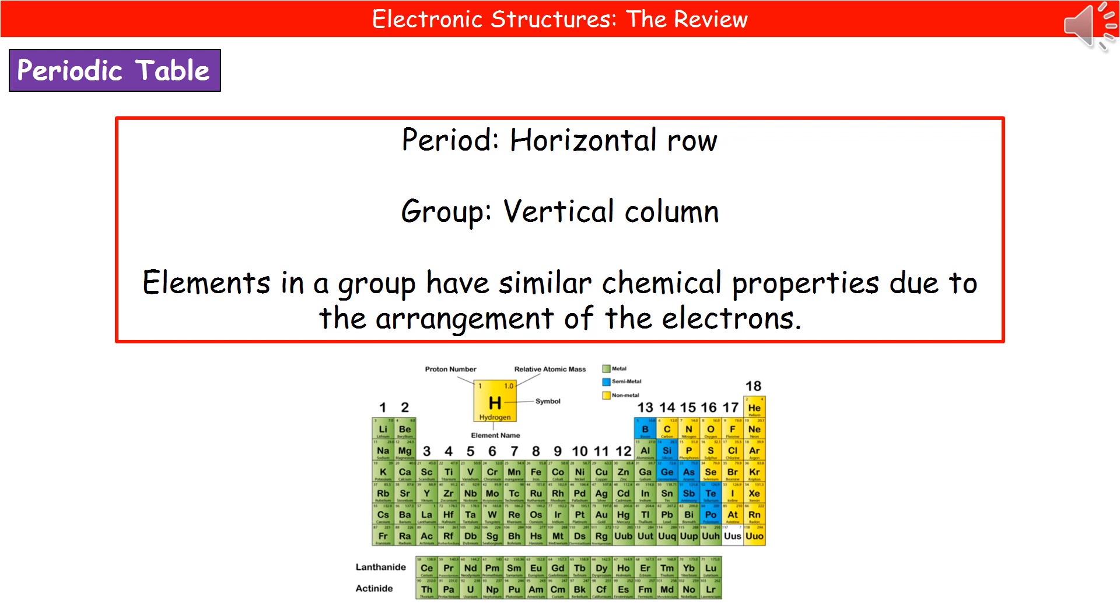Second one is the groups. Those are the vertical columns and you will have two possible numbers associated with them. So you might have learnt it as groups 1, 2, 3, 4, 5, 6, 7 and 8 or 0. Those are the non-IUPAC group numbers. Or you've got the ones that are the IUPAC group numbers, which go from 1 to 18, as you can see in the diagram at the bottom there.